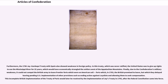Furthermore, the 1786 Jay-Gardoqui Treaty with Spain also showed weakness in foreign policy. In this treaty, which was never ratified, the United States was to give up rights to use the Mississippi River for 25 years, which would have economically strangled the settlers west of the Appalachian Mountains. Due to the Confederation's military weakness, it could not compel the British Army to leave frontier forts which were on American soil — forts which, in 1783, the British promised to leave. This incomplete British implementation of the Treaty of Paris would later be resolved by Jay's Treaty in 1795, after the federal constitution came into force.